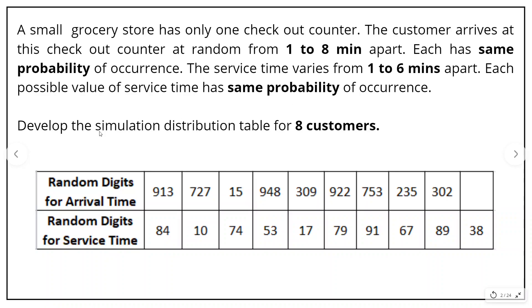We have to develop the simulation distribution table for 8 customers. The probability of a customer arriving at the checkout counter is the same, with values varying from 1 to 8 minutes. Similarly, the service time required for each customer has the same probability, with values varying from 1 to 6 minutes. The question has also provided random digits for arrival time and service time, which we will use later. So let's see how to approach the problem.